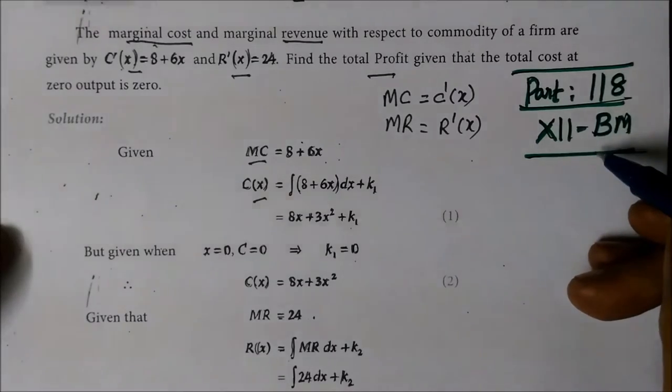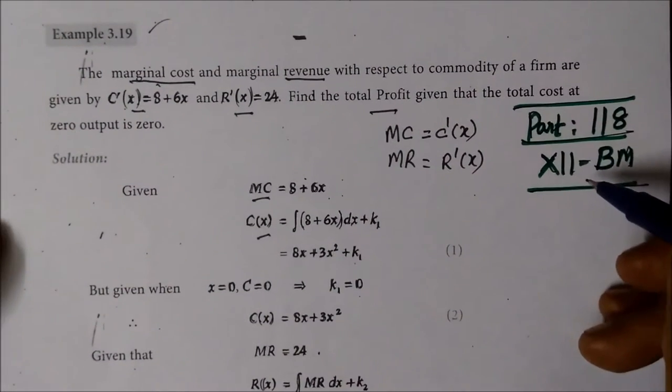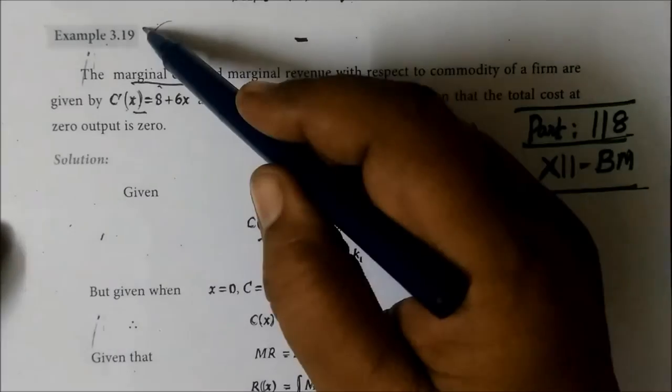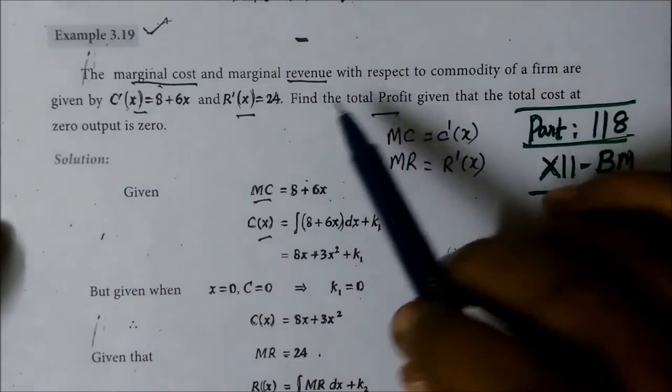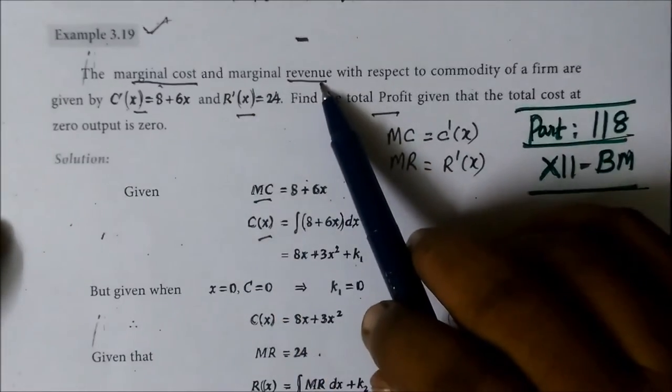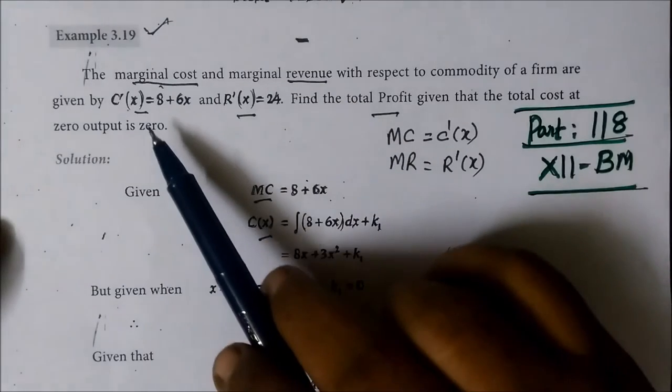Part 118, 12th Business Mass. Example 3.19: You are given marginal cost and marginal revenue.